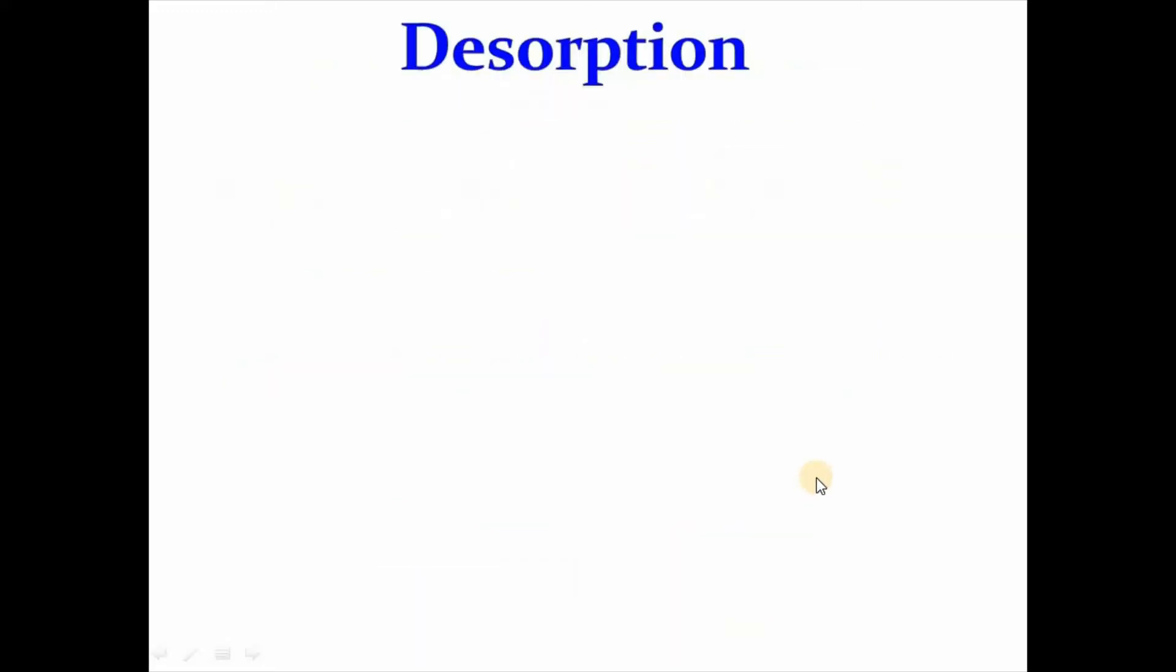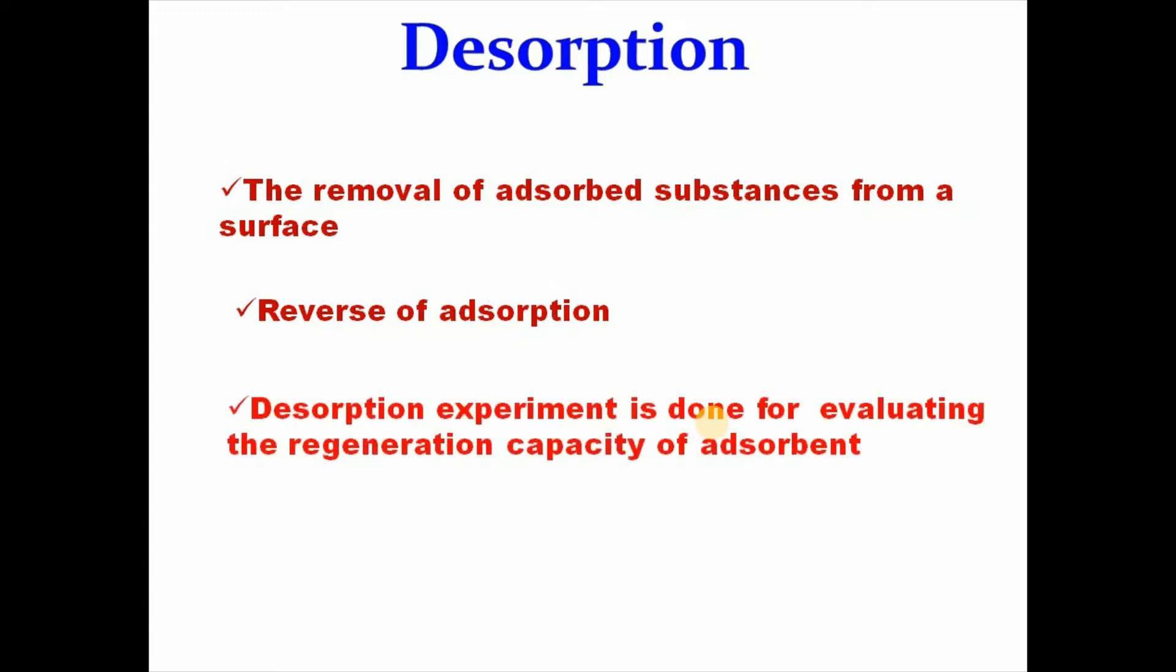Then comes desorption, which is the removal of adsorbed substances from a surface. And it is the reverse of adsorption. Desorption experiment is done for evaluating the regeneration capacity of adsorbent. For example, desorption of cobalt from manganese dioxide after adsorption.